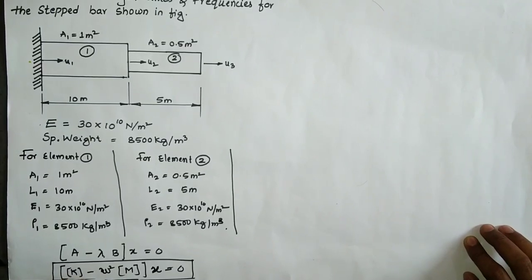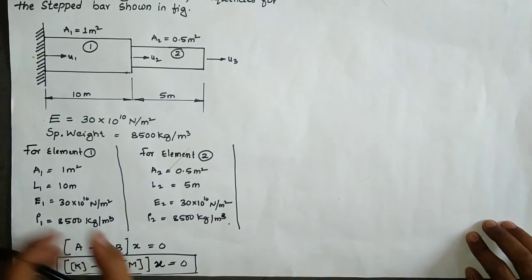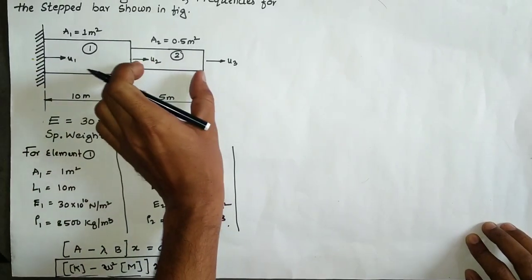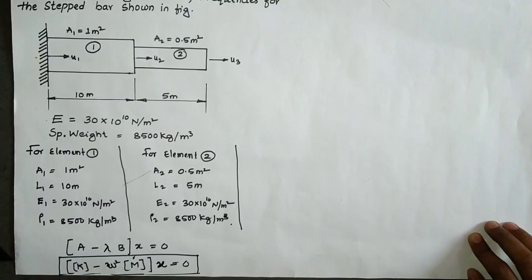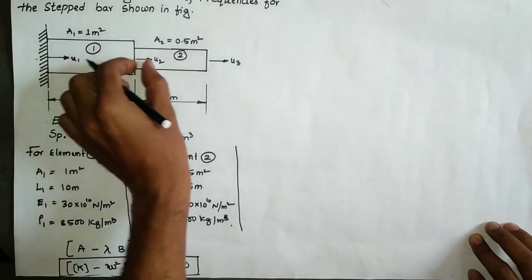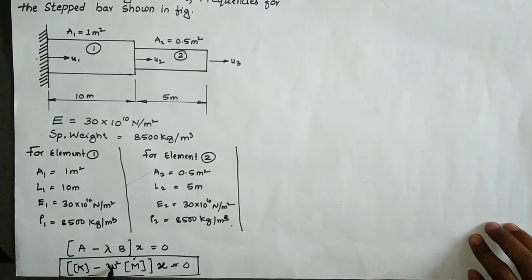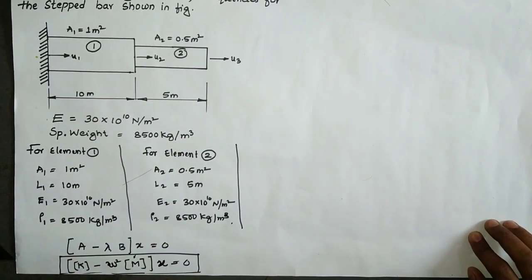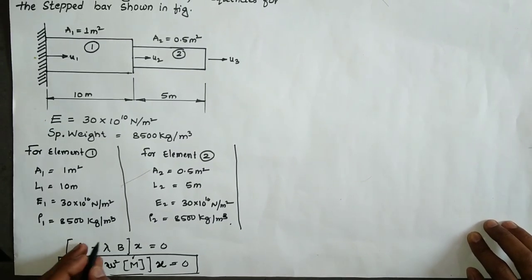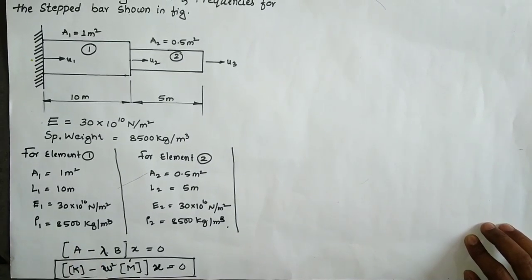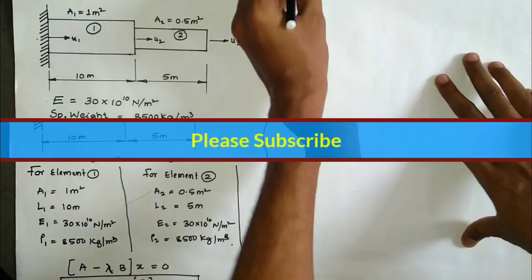First we calculate the global stiffness matrix K by adding K1 and K2. After that we calculate the mass matrix for element 1 and element 2, then add them to get the global mass matrix. Here u1, u2, u3 are the displacements, and ω² is the frequency of the stepped bar. Before calculating frequency, we calculate the eigenvalue λ — we will get two lambda values.